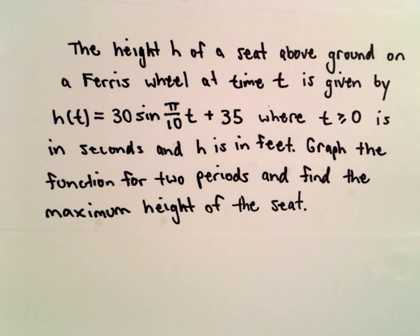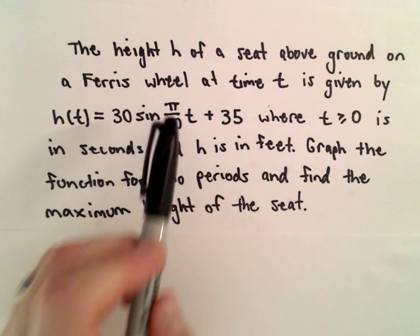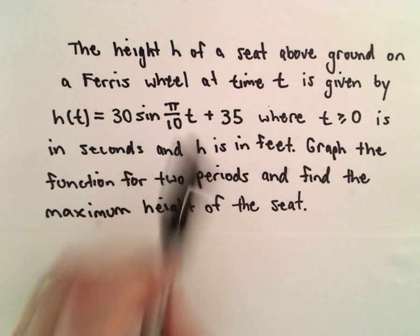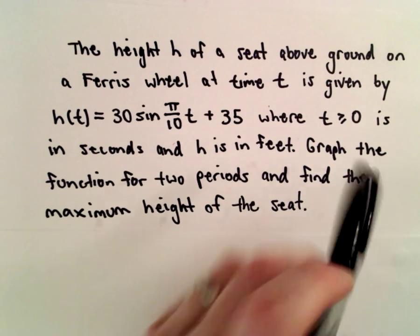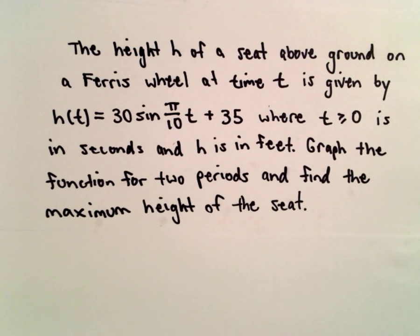The height h of a seat above ground on a ferris wheel at time t is given by the function h(t) = 30 times sine of (π/10)t + 35, where t is greater than or equal to zero, measured in seconds, and h is in feet. We're going to graph this function for two periods and find the maximum height of the seat.